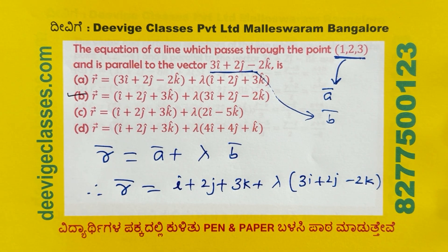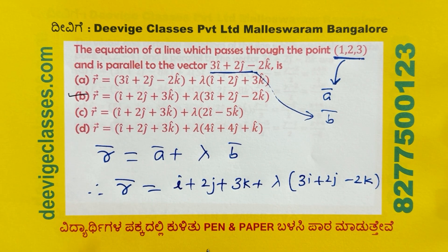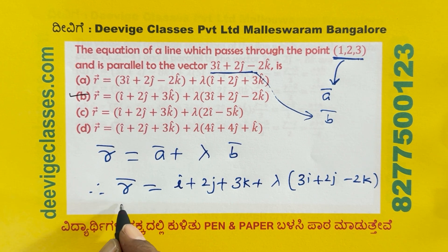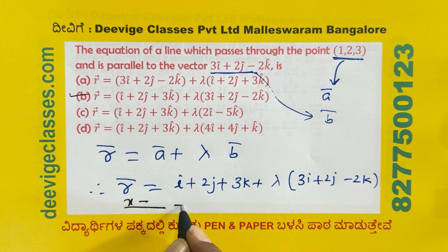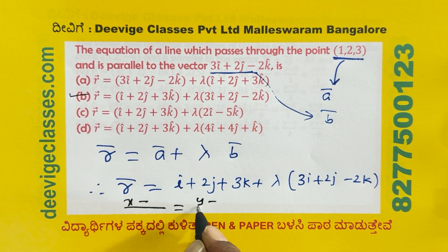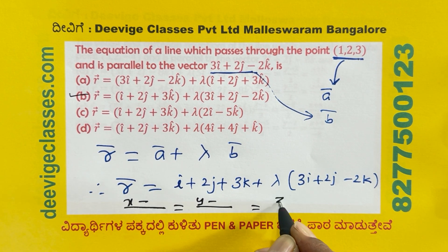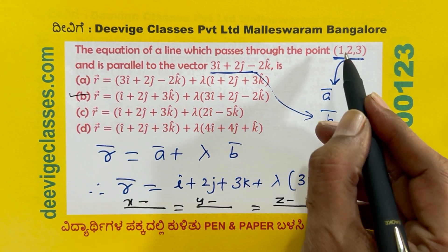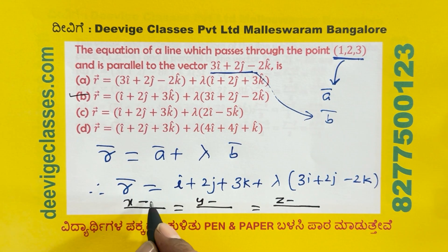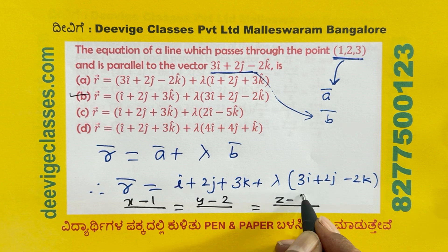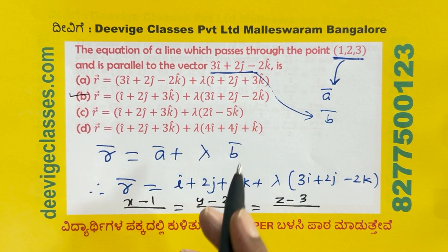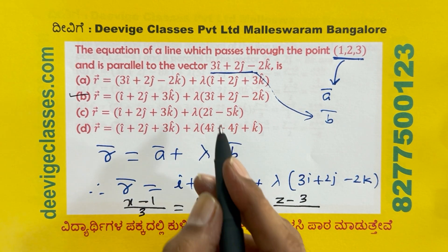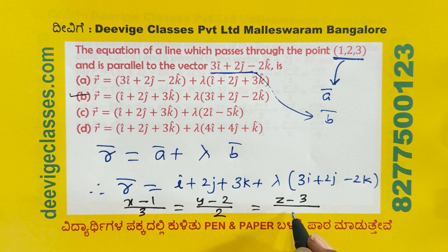For the Cartesian form, it is very simple. X minus denominator, Y minus denominator, Z minus denominator. The point gives numerators 1, 2, 3. The direction ratios from vector B are 3, 2, minus 2. So the Cartesian form is: x minus 1 over 3 equals y minus 2 over 2 equals z minus 3 over minus 2.